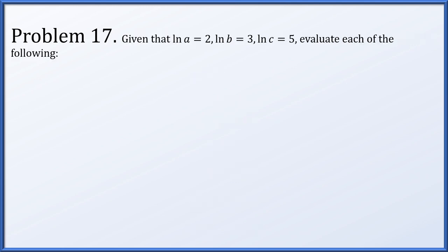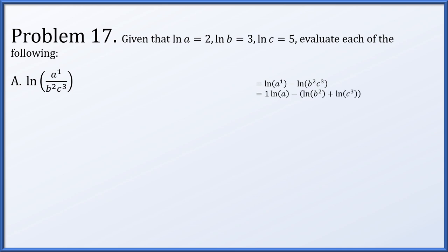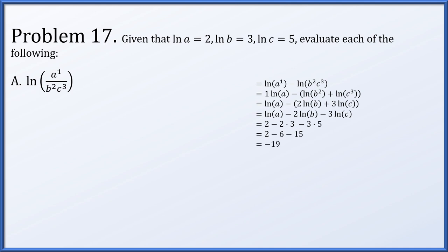Problem 17: given that ln a equals 2, ln b equals 3, and ln c equals 5, evaluate four expressions. For part a, the natural log of a over b squared times c cubed: we split the quotient as a difference, then the denominator's product as a sum. Bringing exponents out as scalar multiples and distributing the minus 1, we substitute known values and compute a result of negative 19.